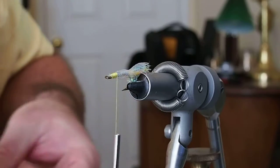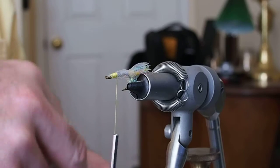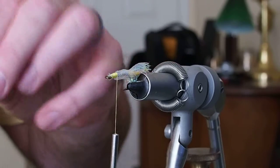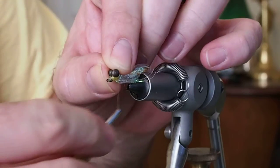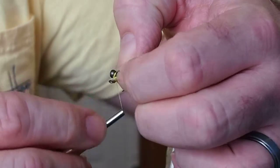And last but not least, I'm going to go ahead and tie on an hourglass eye. The original fly calls for bead chain, but I like heavy flies, so I'm going to use an hourglass.